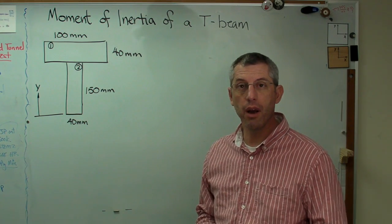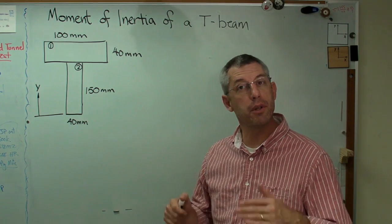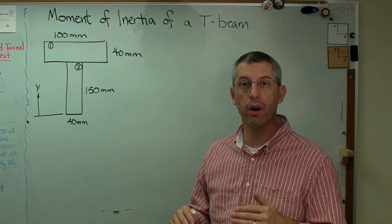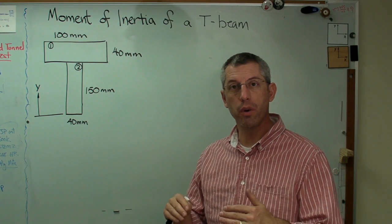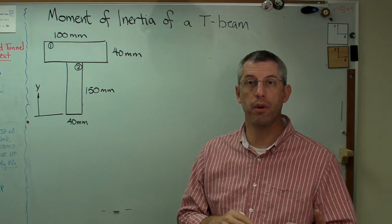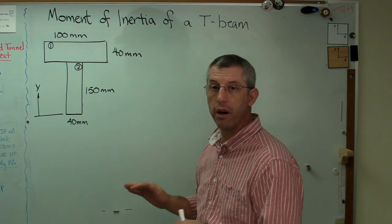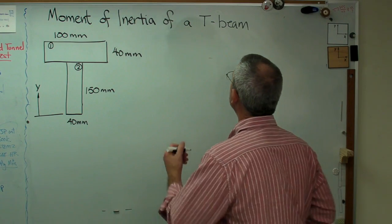So to find the area moment of inertia, there's two steps. The first is we've got to figure out where the centroid is. Once we know where the centroid is, then we can do the area moment of inertia calculation for the entire shape. So let's start by finding the centroid.